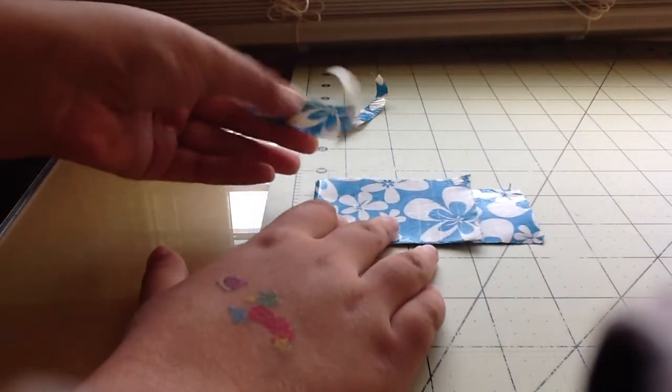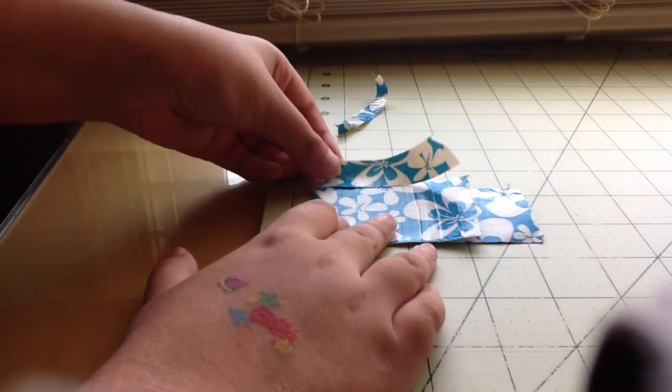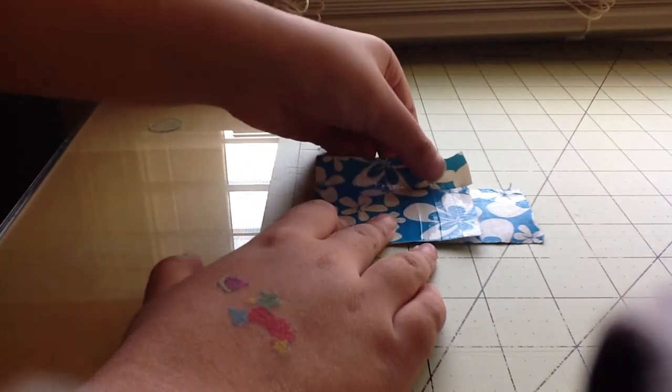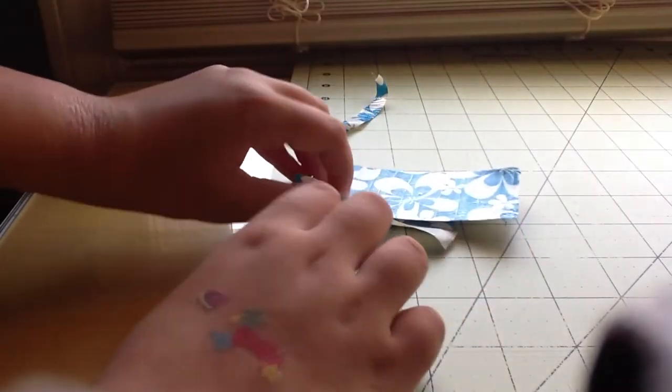What you're going to do is tape the sides like so. Basically tape it down. And then flip it over and fold it over.